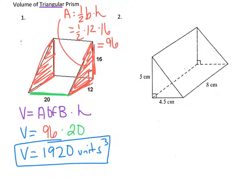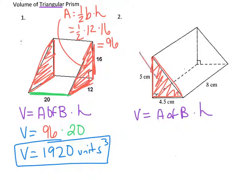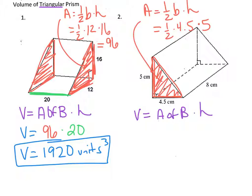We'll do one more example. In number two, we have a triangular prism, and the volume of any prism is area of base times height. I'm going to color in one of the bases — since it's a triangular prism, the base is a triangle. The formula for a triangle is one-half base times height. The base in this case is 4.5 and the height is 5. So, 0.5 times 4.5 times 5 gives us 11.25. The area of the base is 11.25.